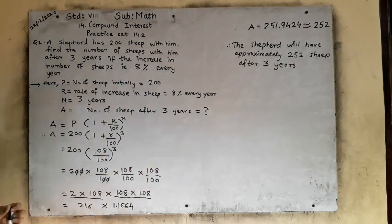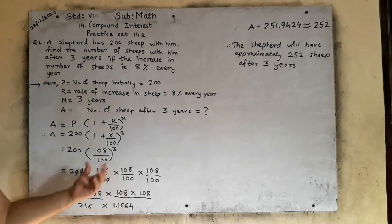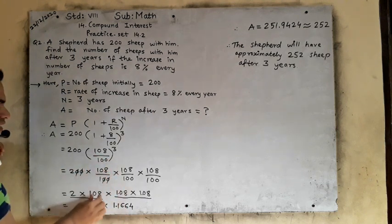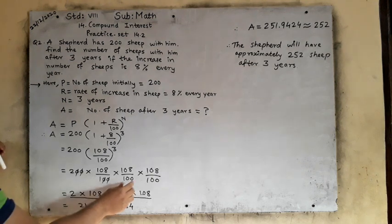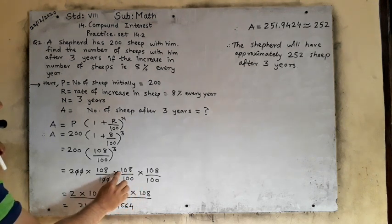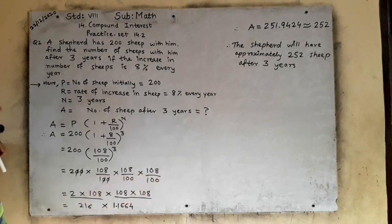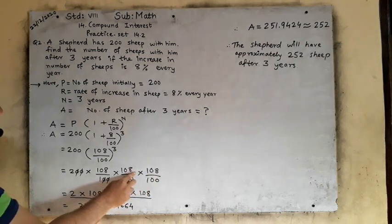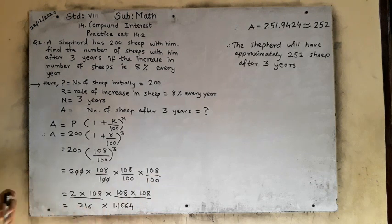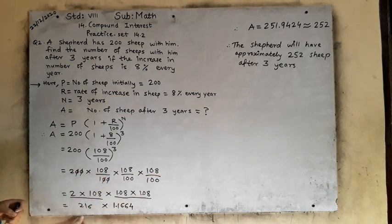We will cancel the zeros. Whatever remains, we write as is. 2 remains from here, 108 remains from here. Now this we can write as 1.08 because 100 has 2 zeros, so after 2 digits there will be a decimal point. So we multiply: 2 multiplied by 108 gives 216.